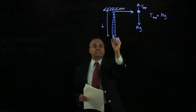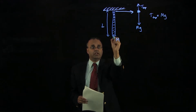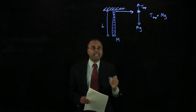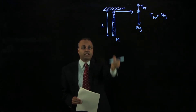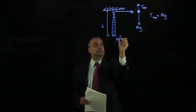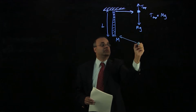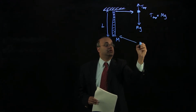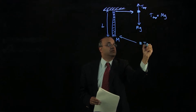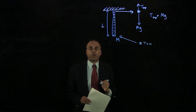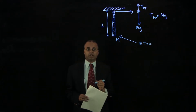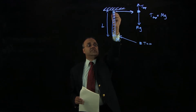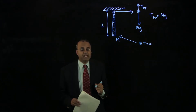Similarly, if we ask what the tension is at the bottom of the rope, an element right at the bottom isn't supporting any weight because there's no weight below it. And so at the bottom, the tension is 0. So the tension is going to vary from mg at the top down to 0 at the bottom.